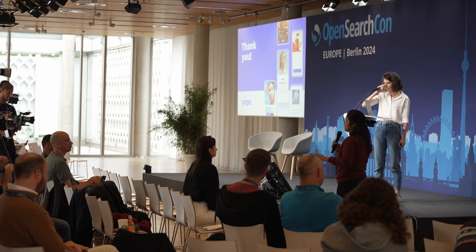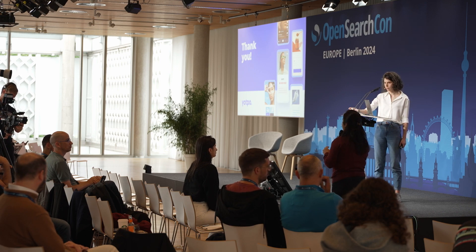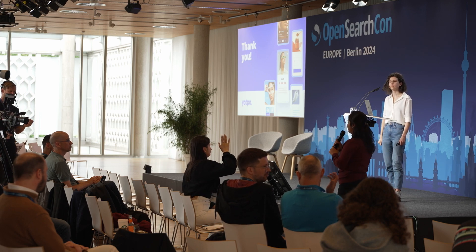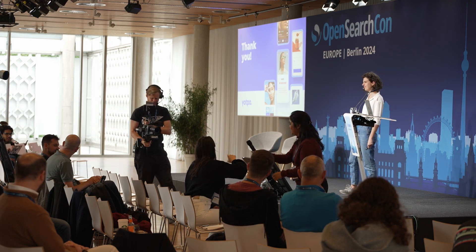Q&A: A question about how the API URL switch between Elasticsearch and OpenSearch was managed. The answer: it's a Java application running on Kubernetes, and the Elasticsearch host is part of the configuration. All that was needed was to change the config map so the environment variable points to the OpenSearch host and then redeploy. That's it.